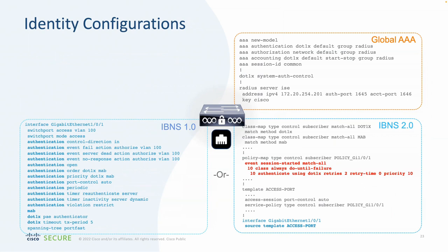Looking at the identity configurations and the CLI: from a global AAA perspective things really haven't changed too much — there are a couple of new commands but for the most part it's pretty much the same. In IBNS, where things made a real difference is in how we tie policies and port modes to the interface. On the old left-hand approach, the 802.1X order is defined right on the interface, which isn't very malleable. By moving the priority and order into a policy on the right-hand side, this allows us to adapt that to a template and use that template on a specific interface.